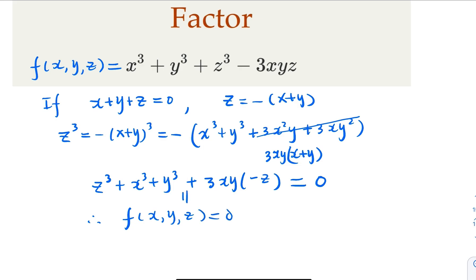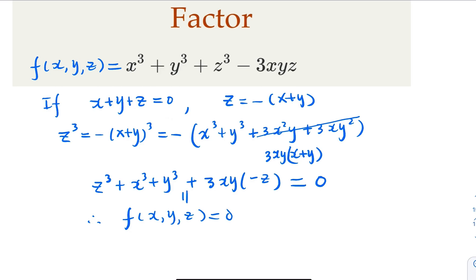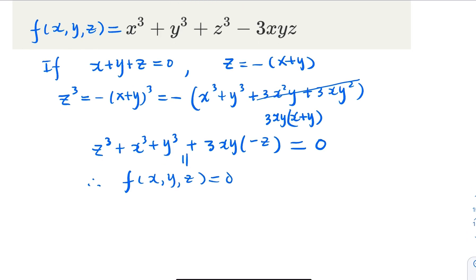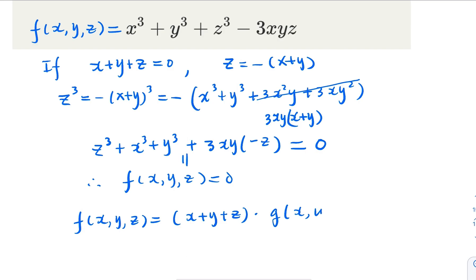From here we can conclude that x plus y plus z is a factor. In other words, f(x, y, z) is going to be x plus y plus z times another polynomial g(x, y, z). How do we find g? We're going to look at this polynomial here.